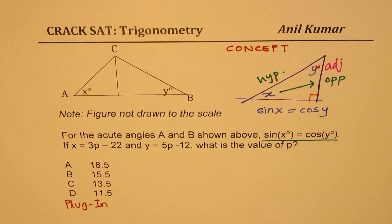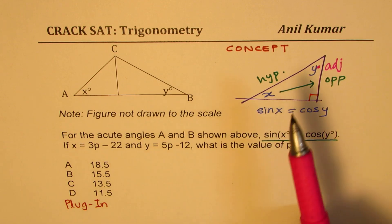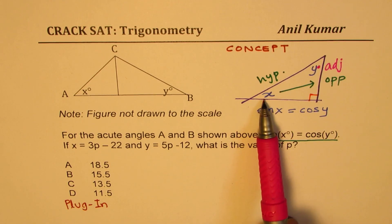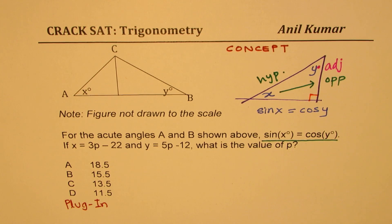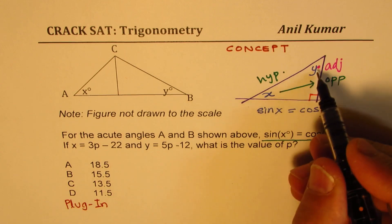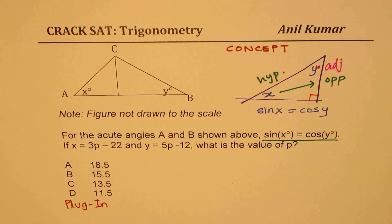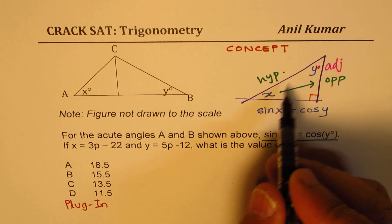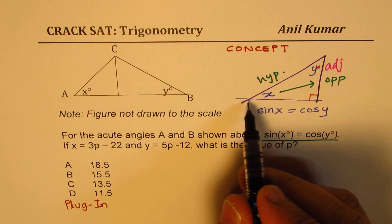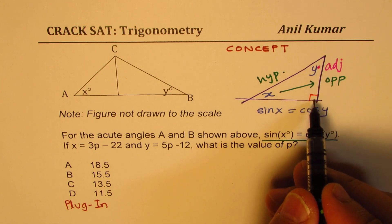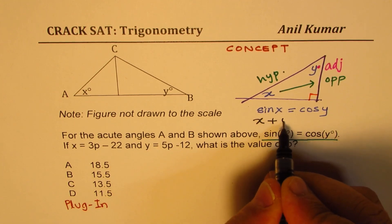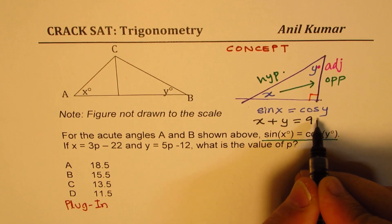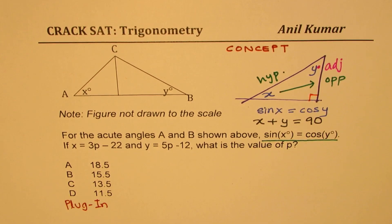But if you look from y point of view, in that case this is adjacent. So therefore sine x has to be equal to cosine y, perfect. Also we could have written cosine x equals sine y. Both work in any right triangle.